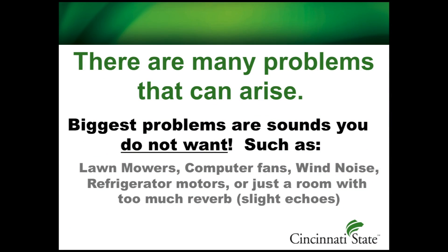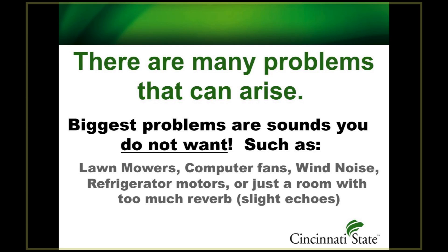There are many problems that arise when doing live audio. Chief among them are natural sounds like lawnmowers, computer fans — my computer fan is going right now — and wind noise. Wind noise is what happens when a microphone is floating out in the air and a strong wind goes past it — you get that kind of rumbling sound that obviously you don't want. You also have refrigerator motors, or rooms that have too much reverb.